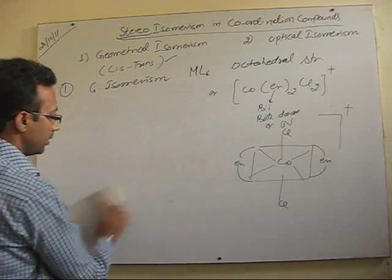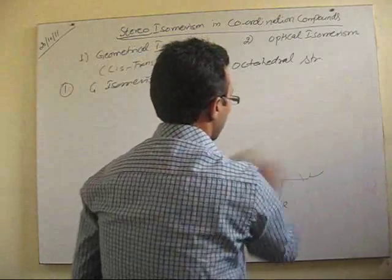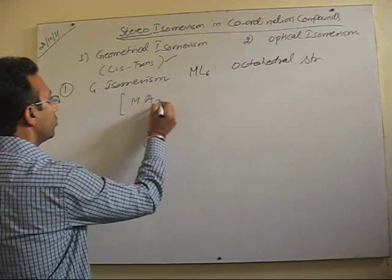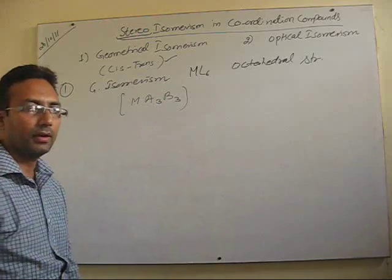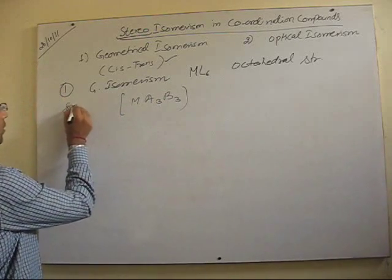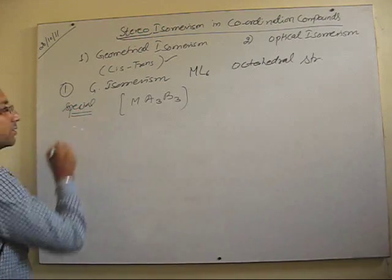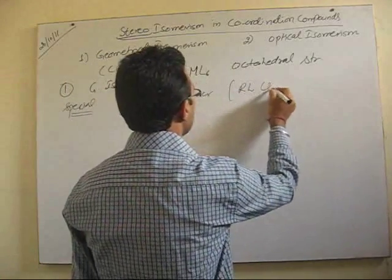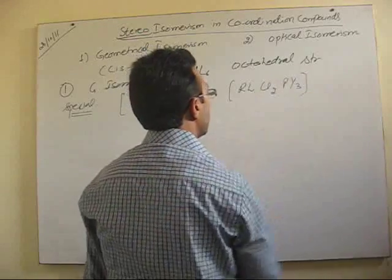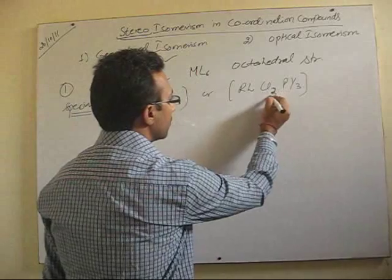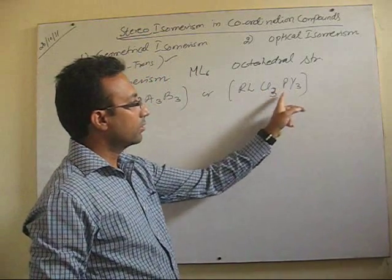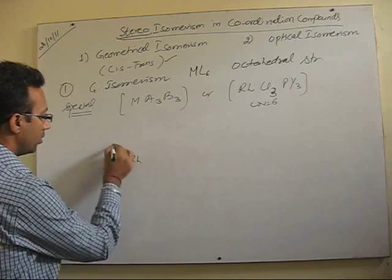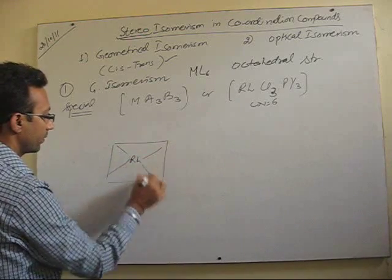Now, we have the third example in case of octahedral complexes. That is, complexes of the type MA3B3. Now, this is a very, very special example from examination point of view also. Usually, it comes. One example of rhodium complexes is there. Here, you have Cl3 and pyridine 3. This is 3. Now, both are monodentate ligands, 3, 3. So, coordination number, it is obvious. This is 6. So, let's draw the two forms in this case.